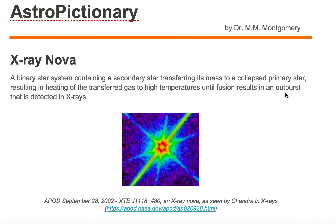If it repeats the X-ray nova again, then we would call the system a recurrent X-ray nova. Now we are looking at an example of a system that has gone through an X-ray nova.